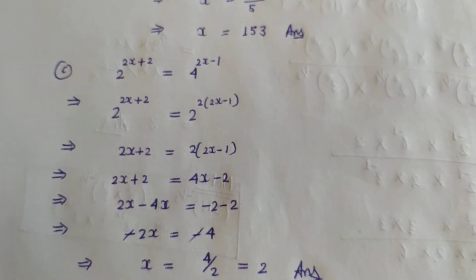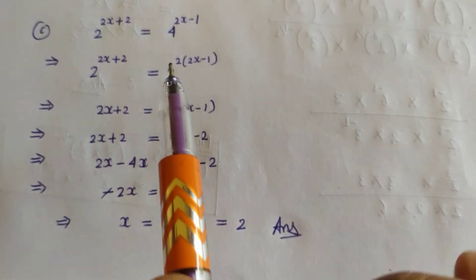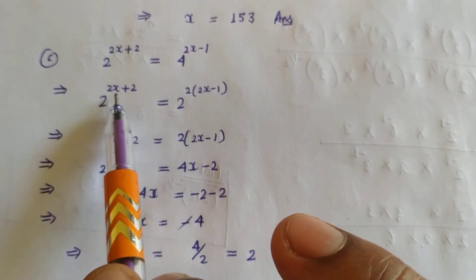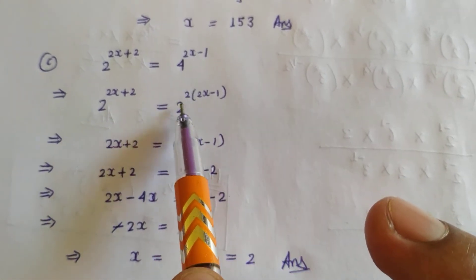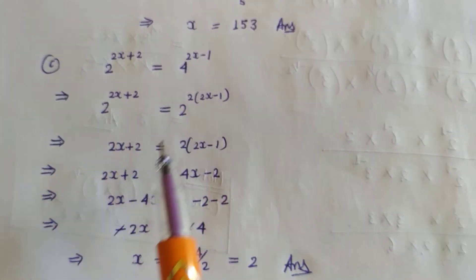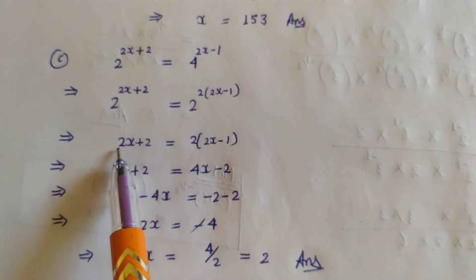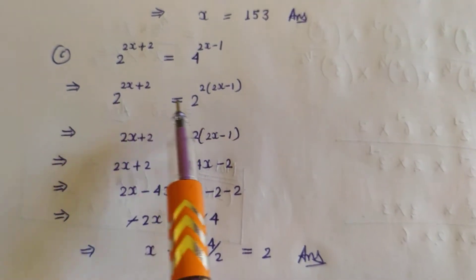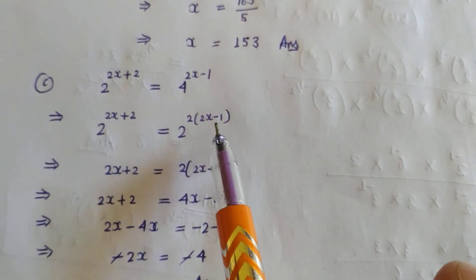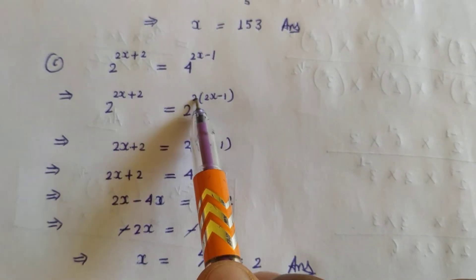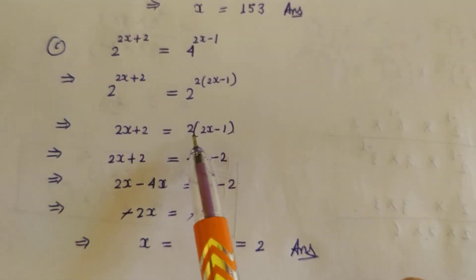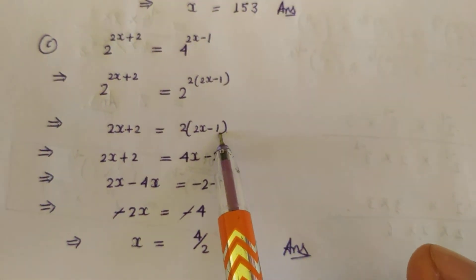Next question: 2 to the power (2x + 2) is equal to 4 to the power (2x − 1). We rewrite 4 as 2 squared, so the right side becomes (2^2)^(2x−1) = 2^(2(2x−1)). Since the bases are now the same, we equate the exponents: 2x + 2 = 2(2x − 1), which expands to 2x + 2 = 4x − 2.